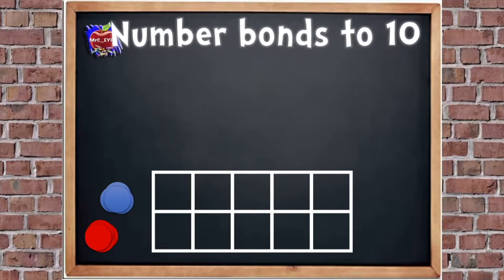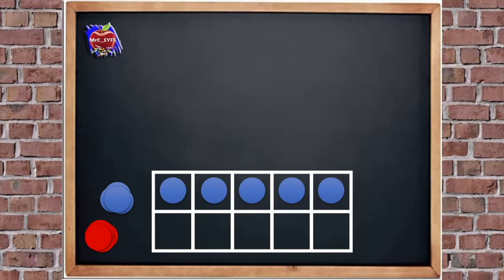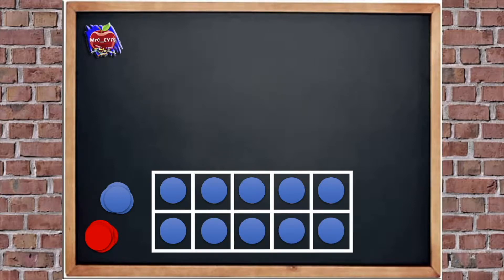Here we go with number bonds to 10. So what's this frame called that we're going to use today? Yeah, it's a tens frame. Why is it called a tens frame? It's because when we fill up our tens frame and we put a counter in each square, it equals 10. So when it's full, we know it equals 10. And that's going to help us today when we're doing our number bonds to 10.